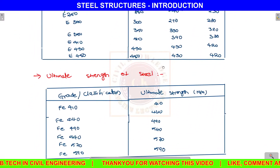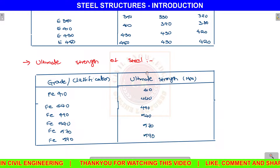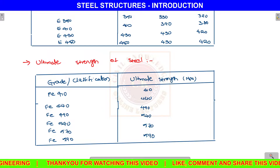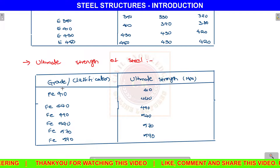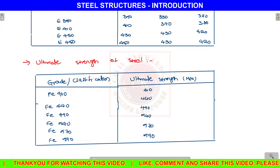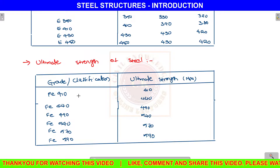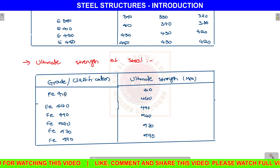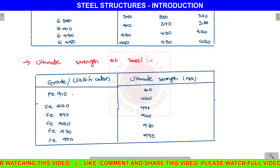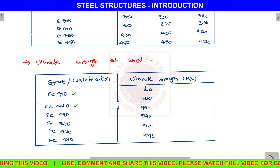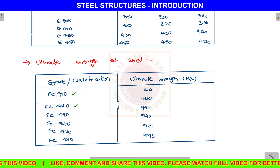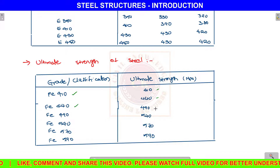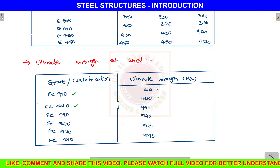For thickness more than 40 mm, it is 220 MPa. This is the ultimate strength of steel. The Fe designations represent the ultimate strength. The corresponding ultimate strength values are: Fe 410, Fe 440, Fe 490, and Fe 540.